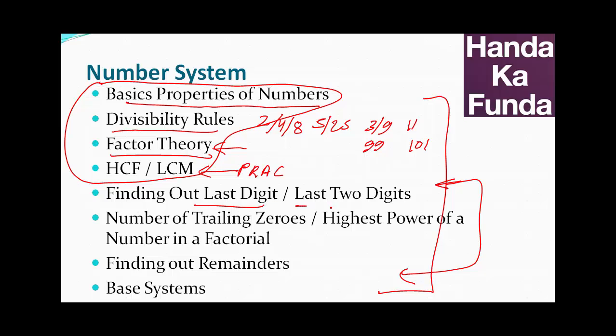I will also deal with the other topics now. So finding out the last digit or finding out the last two digits. Last digit can help you eliminate options, but very rarely you will get a question on finding out the last digit. Finding out the last two digits, it's almost rare, very, very rare to get a question on finding out the last two digits. But people still try and learn that. Why do they do that? Because it looks impressive. Trust me, it's not going to add a lot of value.